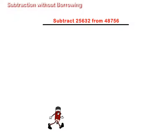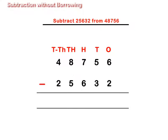Let us subtract 25,632 from 48,756. Put the digits of the given numbers in columns first, as shown on the screen.